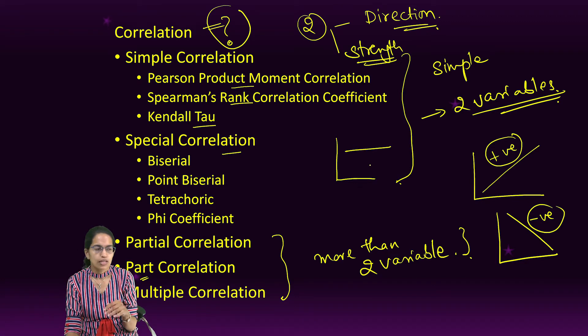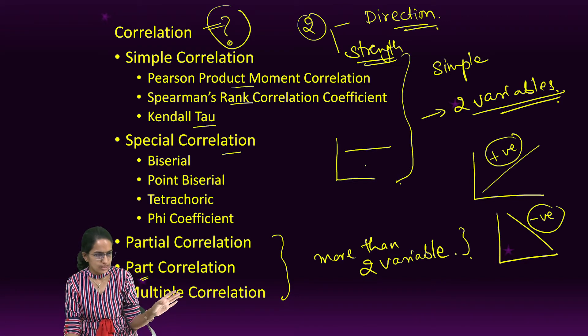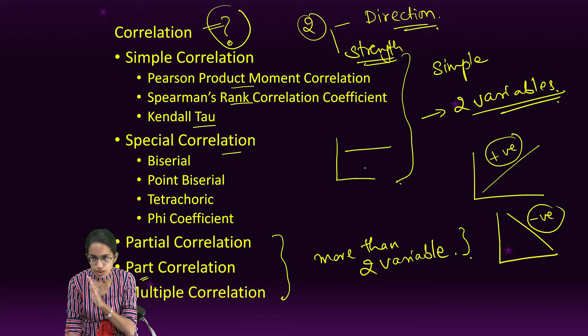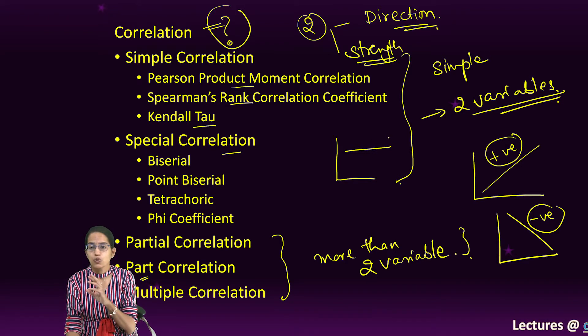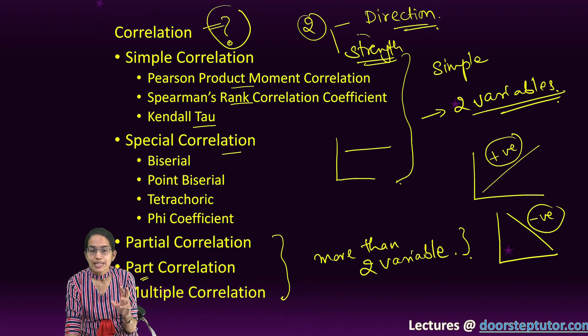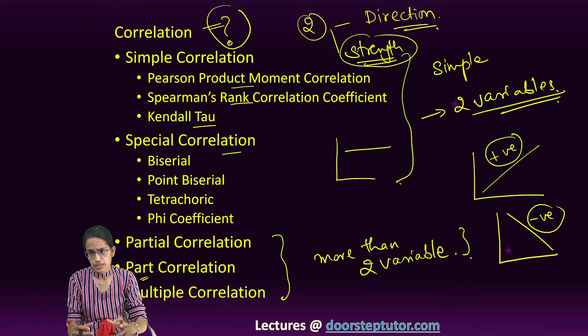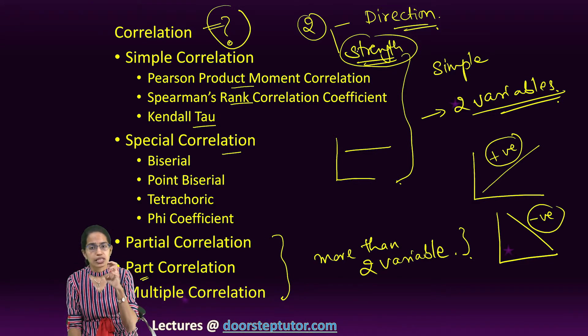Whatever changes I do in one variable, the other variable remains as it is. We call this as no change in the variable, so there is no relation which exists. The next is strength. How strong the relationship is is determined by the strength.